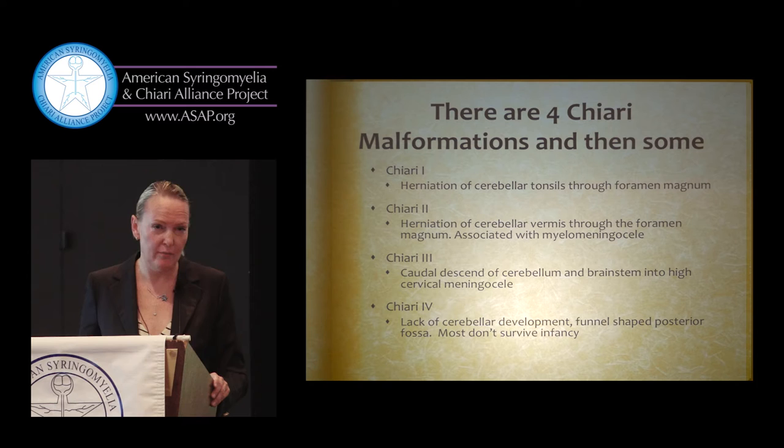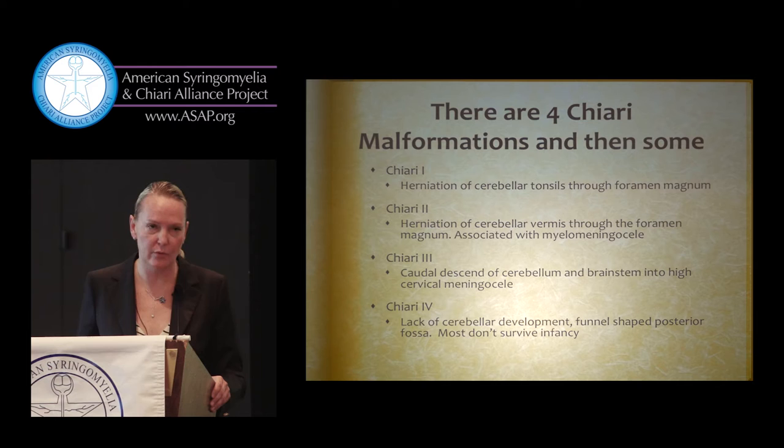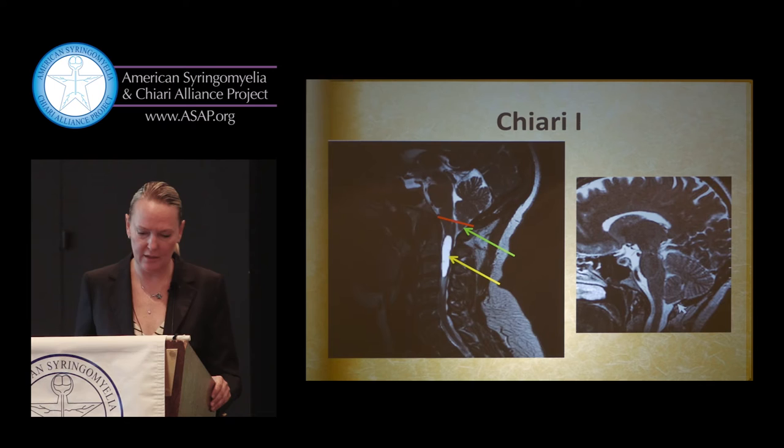Chiari 3 is a very severe form — you usually see either a high cervical encephalocele, meningocele, or an occipital meningocele. Chiari 4 is where the cerebellum doesn't develop at all and the whole posterior fossa is kind of a funnel-shaped, unformed structure. Babies with Chiari 4 don't usually make it through infancy.